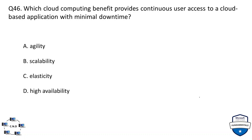Welcome to Part 4 of the Azure Fundamentals series. The first question is: which cloud computing benefit provides continuous user access to cloud-based applications with minimal downtime? The options are: A) agility, B) scalability, C) elasticity, and D) high availability.